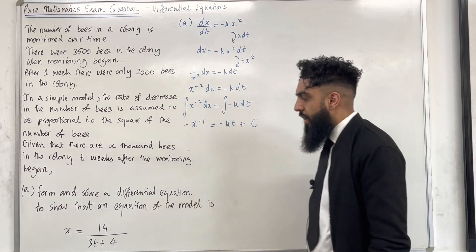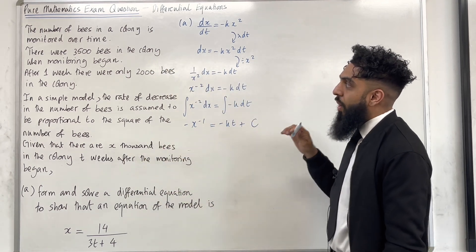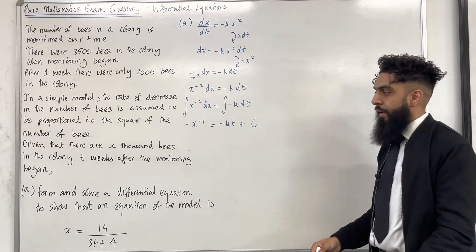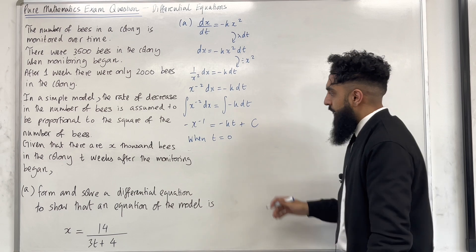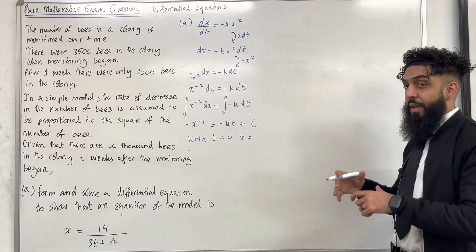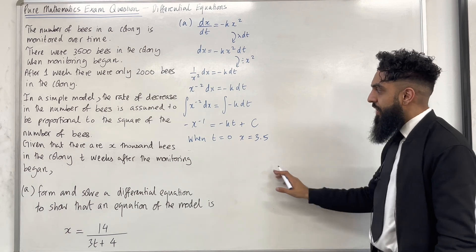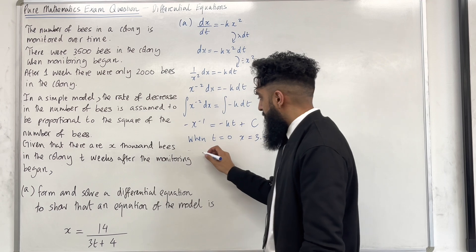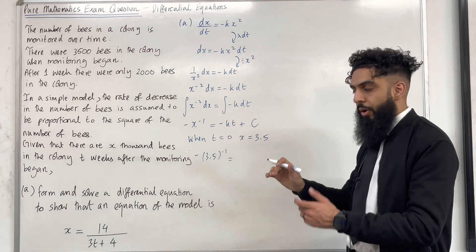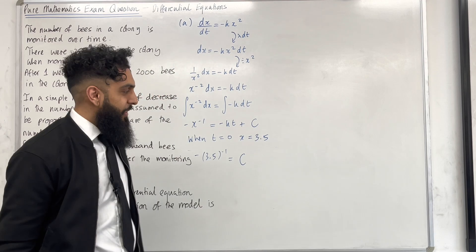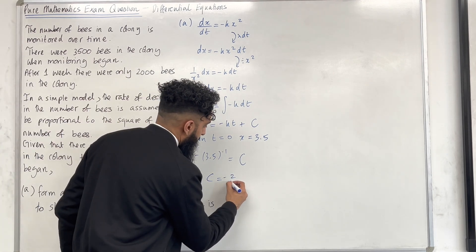All that remains is to calculate k and c, and then we can rearrange to show x equal 14 over 3t plus 4. Now x is measured in thousands. Going back to the problem, there were 3,500 bees when monitoring began, so when t equal 0, we have x equal 3,500 bees. But because x is measured in thousands, we write x equal 3.5. Substituting these boundary conditions into the equation, I get minus 3.5 to the power minus 1 equal minus k times 0, which is 0, hence we've got c. Putting this into my calculator, I get c equal minus 2 over 7.